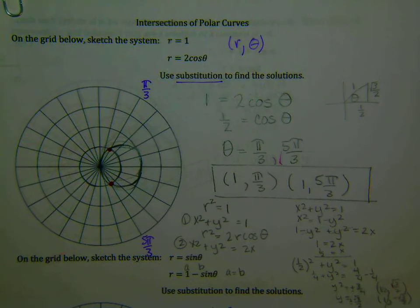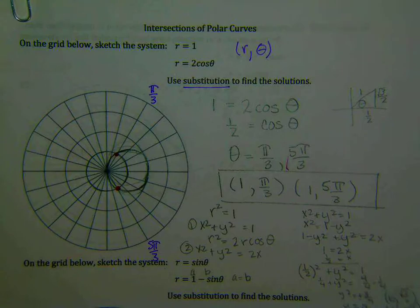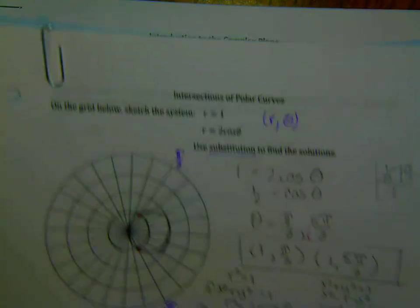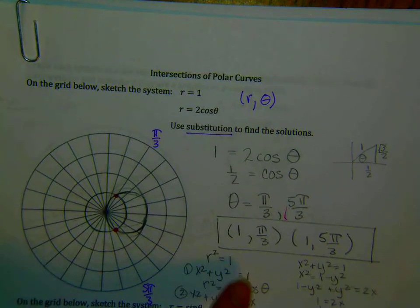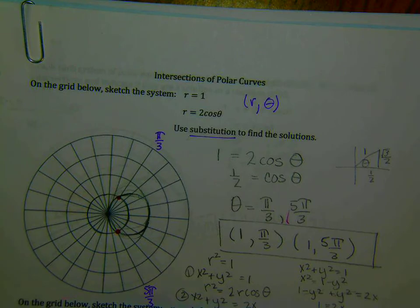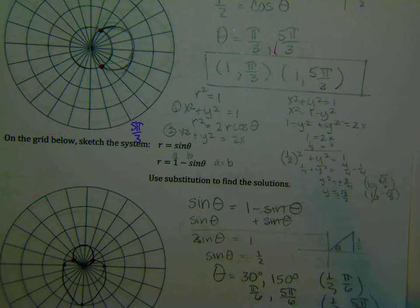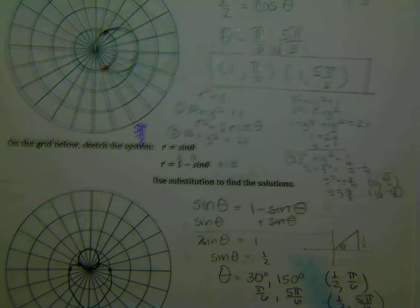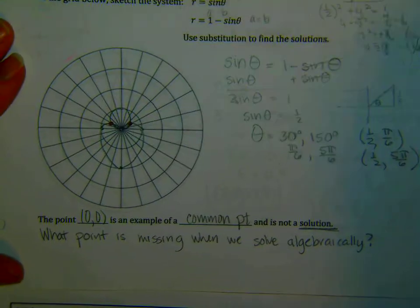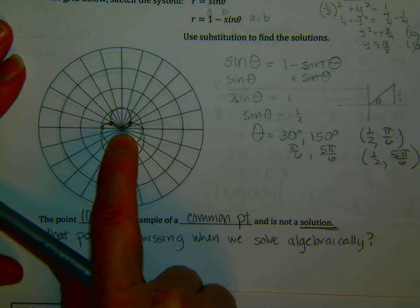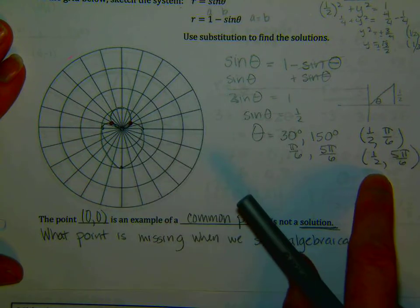Before we go on to our topic today, which is Introduction to the Complex Plane, I want to go back over one point about intersections of polar curves. We were talking about common points. A common point is a point where the graphs intersect but cannot be found algebraically.